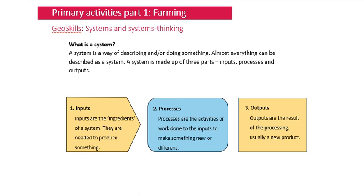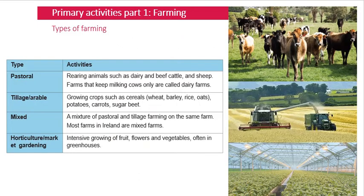Now we're going to look at types of farms. Many of these will be familiar, particularly where we live in County Meath, which is a great farming county. The first type is pastoral farming — it simply refers to rearing animals on grass. Those animals could be cattle, sheep, or goats. Pasture land means fields, so examples include beef farms, dairy farms, and sheep farms.